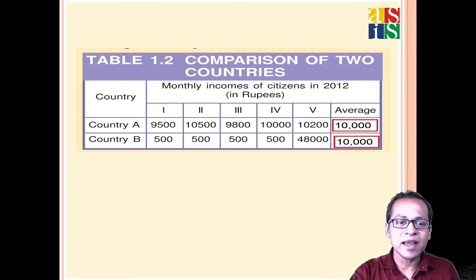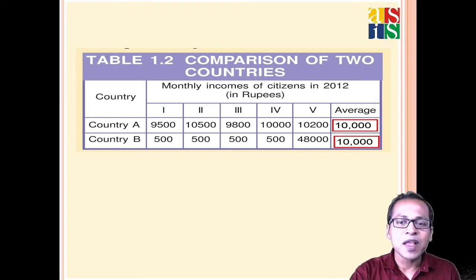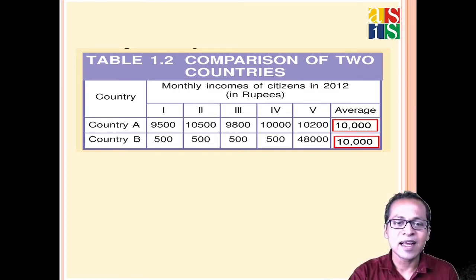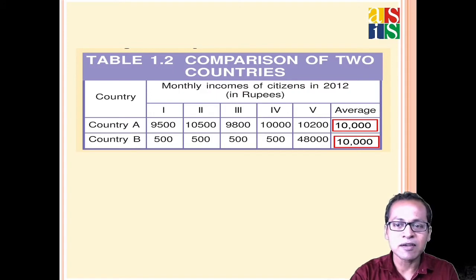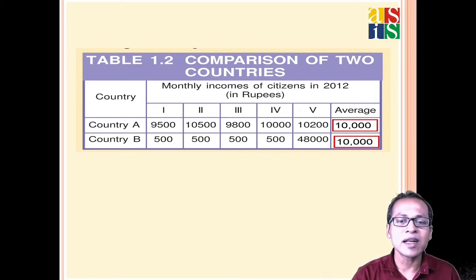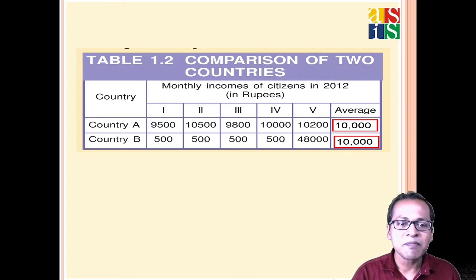Consider Country A and Country B, both having an average income of 10,000. Country A is more developed because almost all people are earning around 10,000. But in Country B, only one person earns 48,000 while the other four persons earn just 500 each. There is very much disparity in income in Country B. Both averages show the same picture, but Country A is more developed because income is equally distributed.